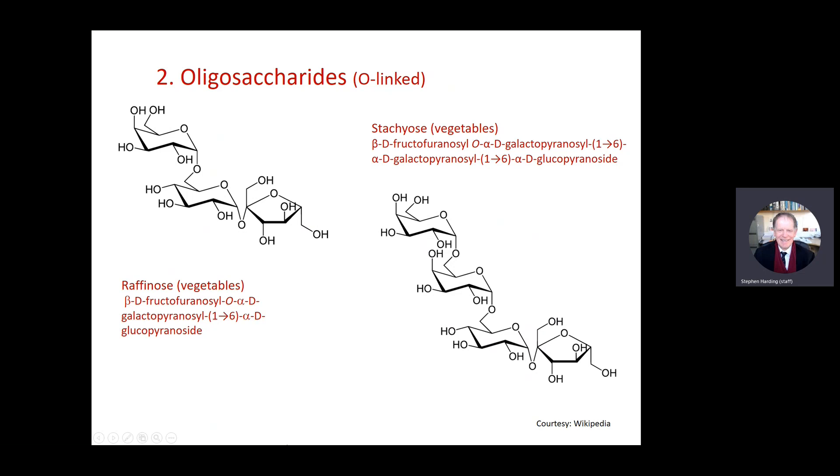Then the next step in complexity are oligosaccharides. These contain between three and nine sugar residues linked together by glycosidic bonds. So these two raffinose and stachios come from vegetable sources. So this one, raffinose, you've got a fructose residue here linked to a galactose residue which is linked through a 1,6 link to a glucose residue. So two glycosidic bonds in this trisaccharide.